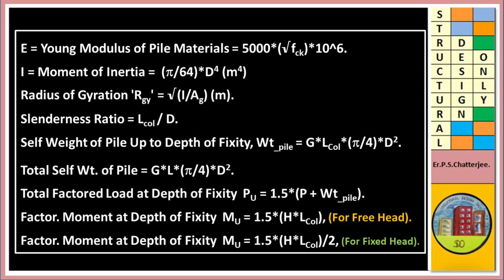Total factored load at depth of fixity: Pu = 1.5 × (P + weight of pile). Factored moment at depth of fixity for free head: Mu = 1.5 × H × L_column. For fixed head: Mu = 1.5 × H × L_column / 2.